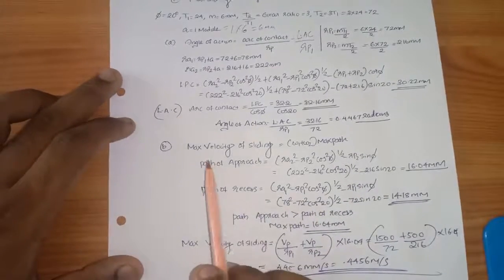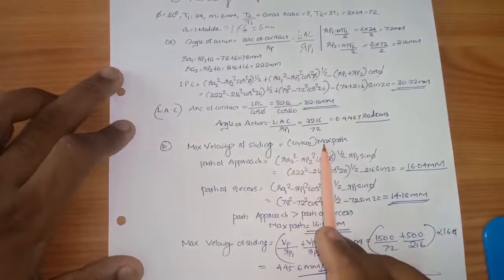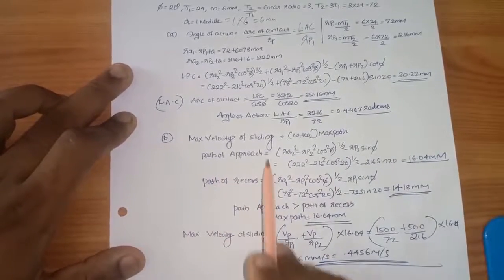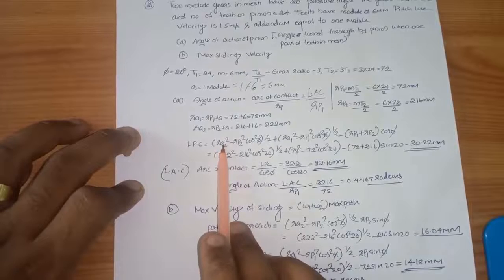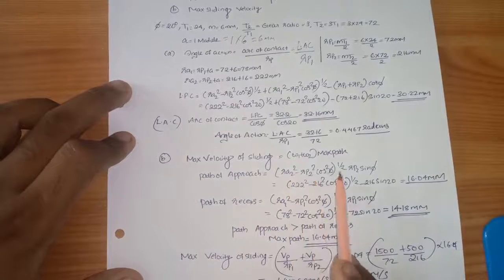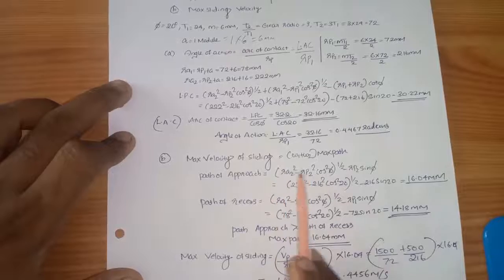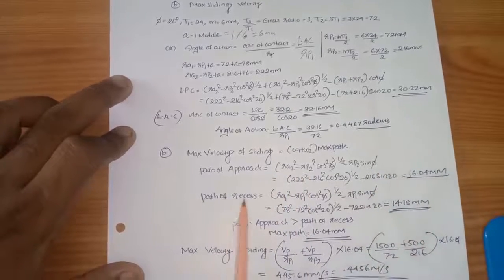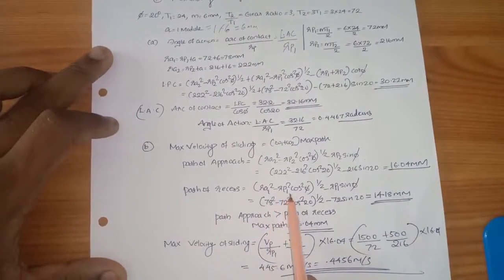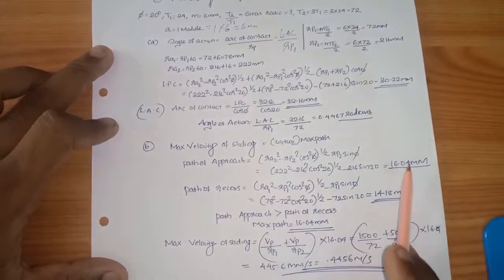Maximum sliding velocity. Maximum sliding velocity equation, omega 1 plus omega 2 into maximum path. Path of approach: ri2 square minus rp2 square cos square phi, minus rp2 sin phi. Path of recess: ri1 square minus rp1 square cos square phi raised to 1 by 2, minus rp1 sin phi.